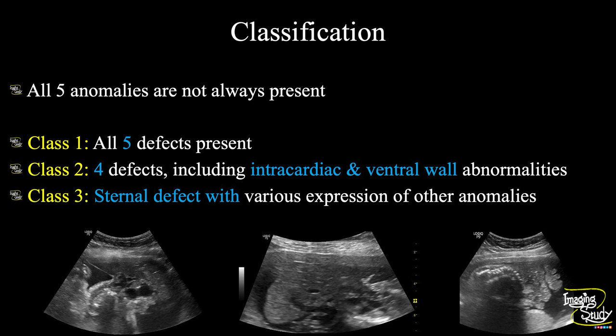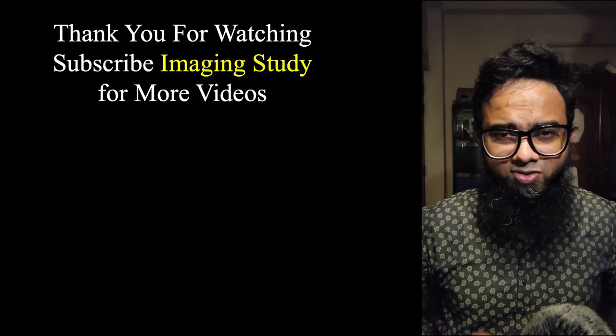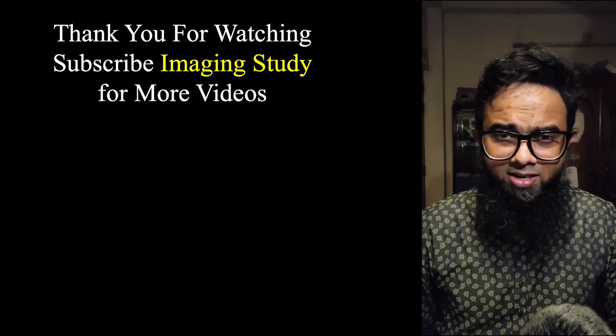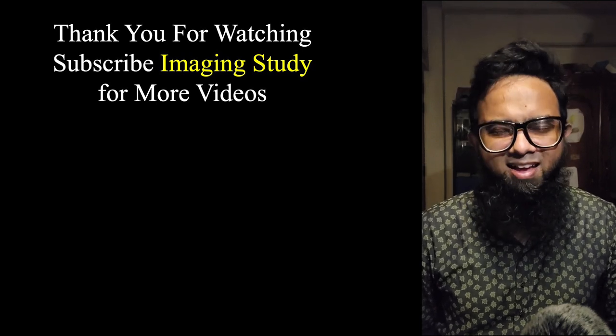There are three classes of pentalogy of Cantrell. Class one: all five defects present, as in our case. Class two: four defects including intracardiac and ventral wall defect. Class three: sternal defect with various expression of other anomalies. Thank you for watching this video — don't forget to subscribe to our YouTube channel and follow us on other social platforms. See you on the next one, have a nice day.